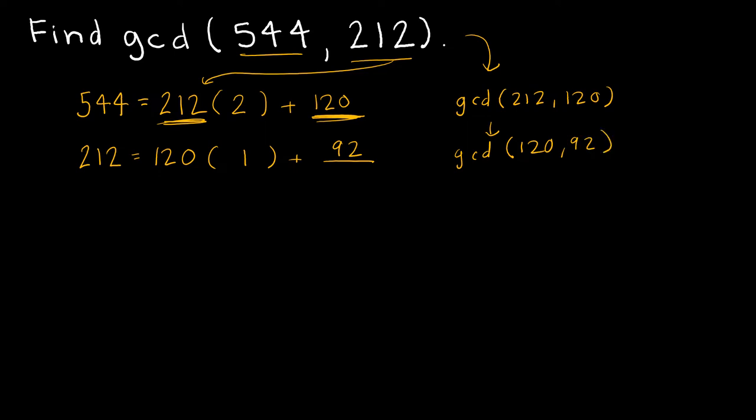So now let's find the GCD of 120 and 92. 120 equals 92 times 1 plus 28. So now I'm trying to find the GCD of 92 and 28.